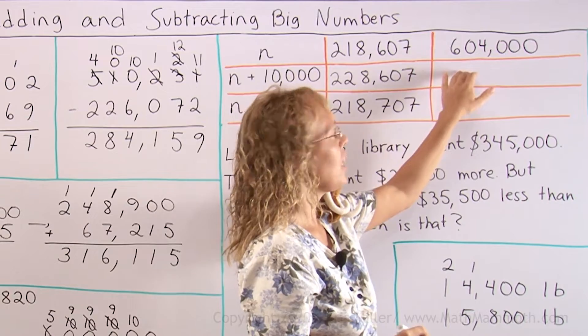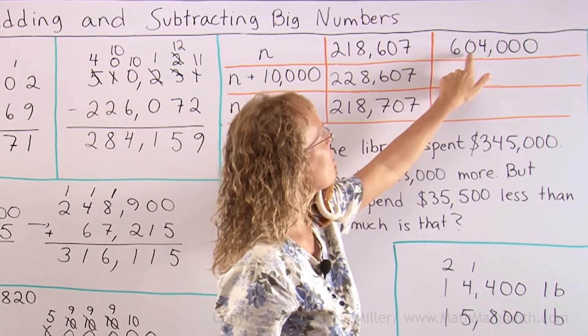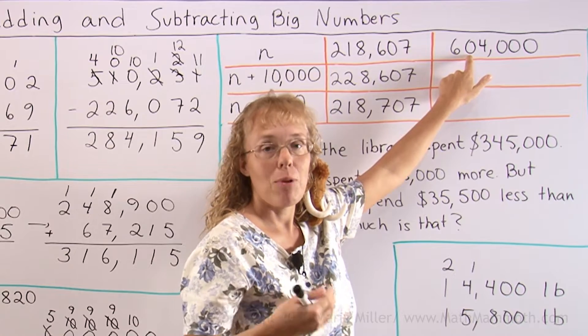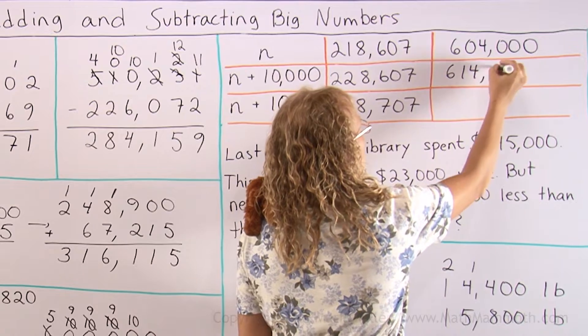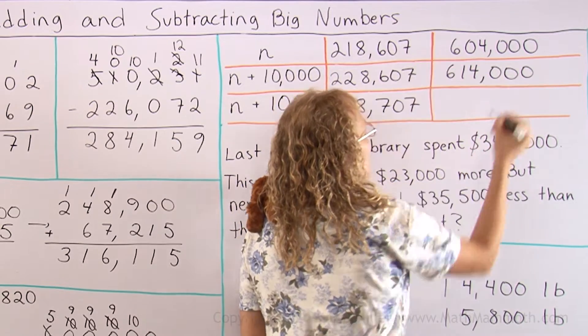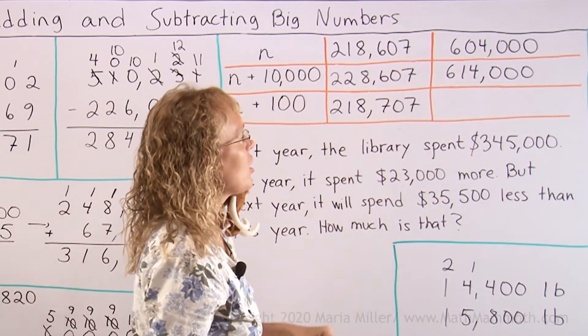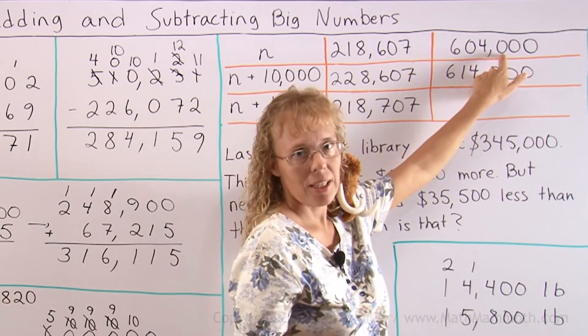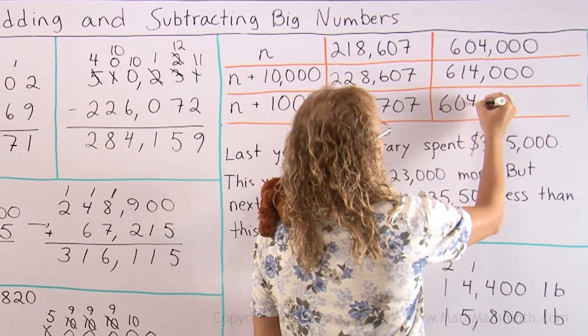And this number it actually is easier. 604,000 plus 10,000. Here's my 10,000's place and I add 1 to it. So I get 614,000. Then I add 100 to this number. So all I need to do is that here's hundreds place. I write 1 there. 604,100.